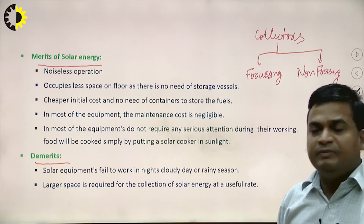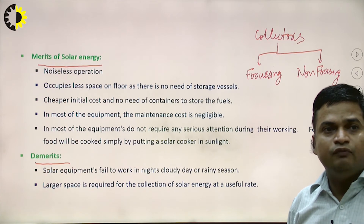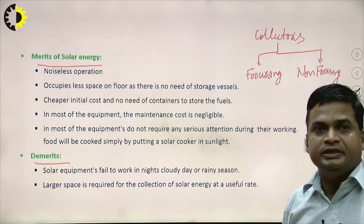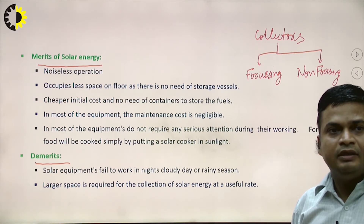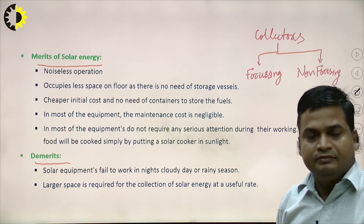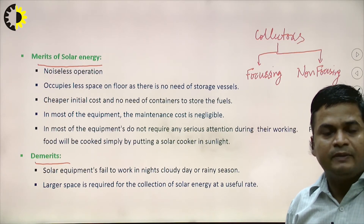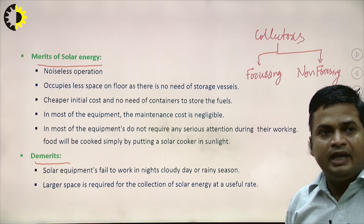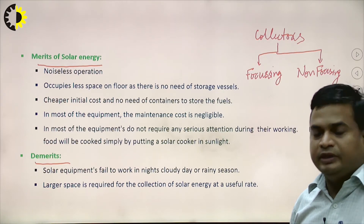There are certain demerits of solar energy as well. Solar equipment fails to work at nights, on cloudy days, or in rainy season, because solar energy is not continuous in nature. When solar energy is not available, solar equipment will not work. Second, a large space is required for the collection of solar energy at a useful rate.